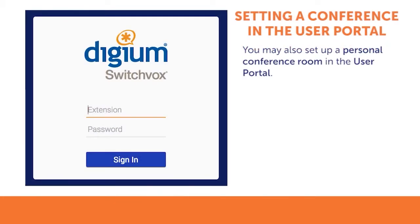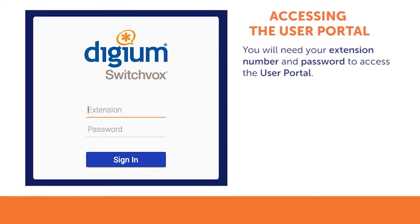Before setting up a conference in a personal conference room, you will need to access the User Portal. To access the User Portal, you will need your extension number and password. If you do not have this information, contact your system administrator.